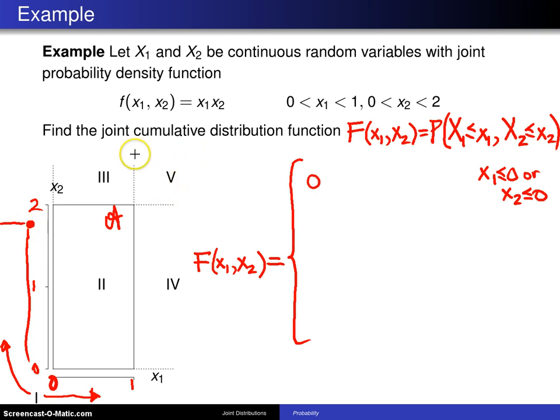Now, let's pick the other easy one, region five, which is any point x1, x2 which is to the northeast of the point one, two. Well when you're out here in region five, I picked off a point right there. I now want the volume underneath the probability density function to the southwest of this particular point, which I'm generically thinking of as x1, x2.